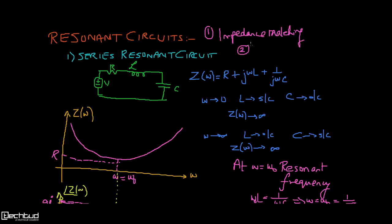The second reason is reflection. If impedances are not matched, reflection will come up, so we need to minimize it. Even in VLSI, where the size of a die is some millimetre square, we use the fundamentals of resonant circuits and RF circuit design so that reflection is minimum. If reflection is high, the current you are getting may be too high and may not be safe for a pin, which may damage your circuit as well.